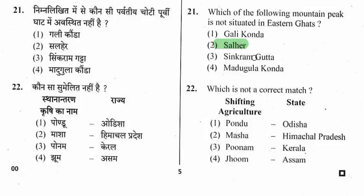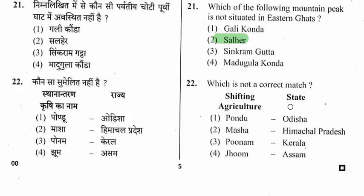Question 22: Which is not a correct match — shifting agriculture and state? The incorrect match is option 2. The rest are correct: Podu in Odisha, Ponam in Kerala, and Jhum in Assam.